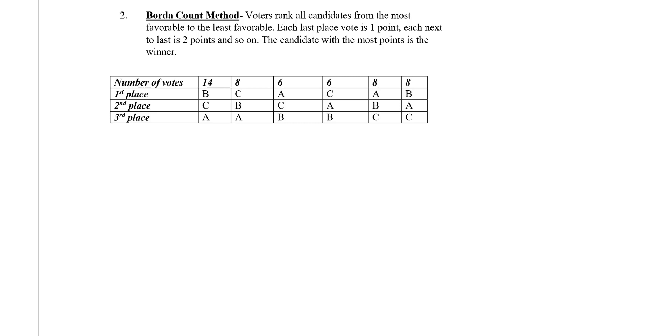If we take a look at the table, on the first row we have the number of votes. We have 14, 8, 6, 6, 8, 8. So if we add all this up we'll find out how many people voted or how many votes we have. In this case 14 plus 8 plus 6 plus 6 plus 8 plus 8, it's 50.